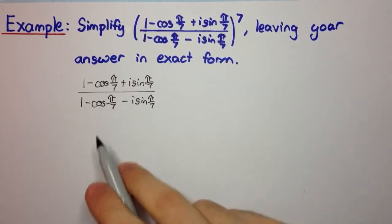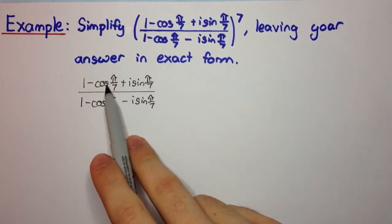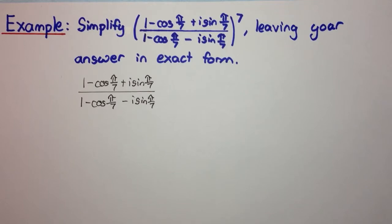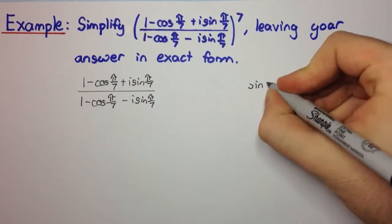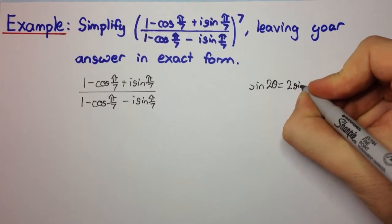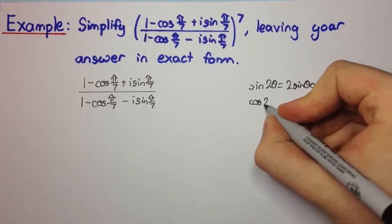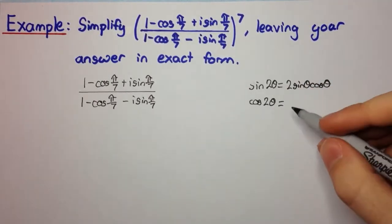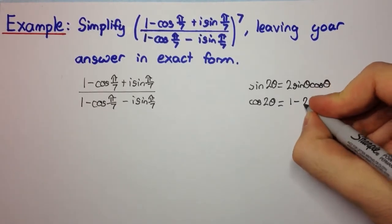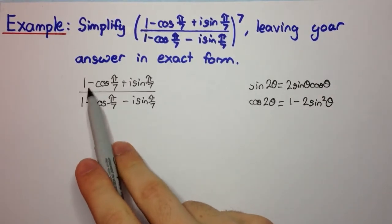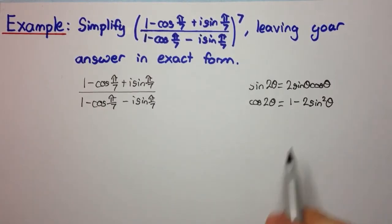The way we do this is to look for another expression for cos that contains a 1, so that we can have 1 minus 1 and cancel those ones out. Recalling your double angle formulas: sin(2θ) = 2·sin(θ)·cos(θ), and cos(2θ) = 1 minus 2·sin²(θ). We want the version with a positive 1 so that when we subtract it the ones cancel.